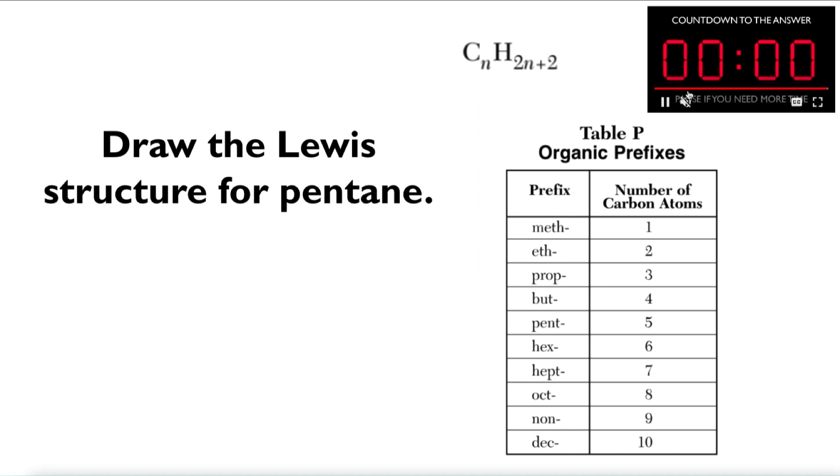So pentane, pent is the prefix for 5. So 2 times 5 plus 2. So the chemical formula, I won't be done when I write the chemical formula, but I can write the chemical formula. It should be C5H12.